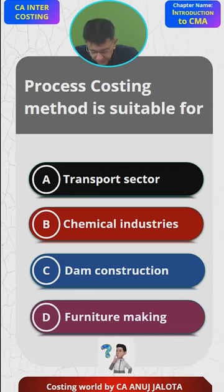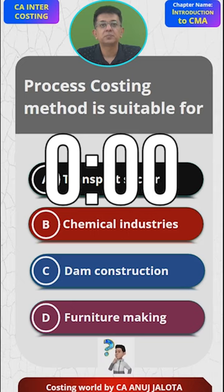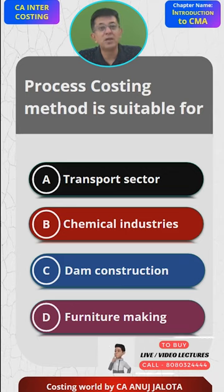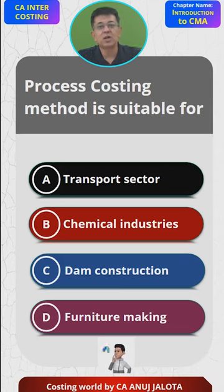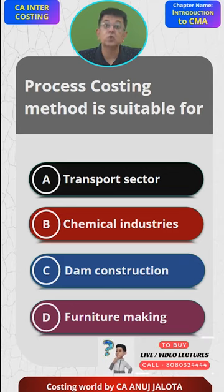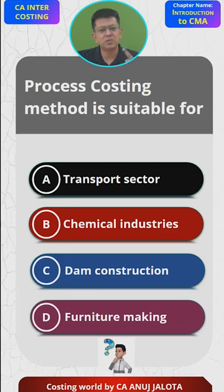You have all done methods of costing. For the transport sector, we have something called operating costing, applicable to companies that are in the service sector. For dam construction, the method of costing is contract costing, applicable to companies that undertake huge contracts like making a dam, bridge, flyover, and so on.